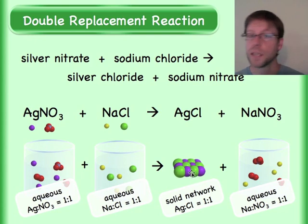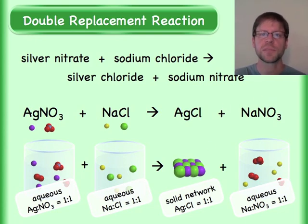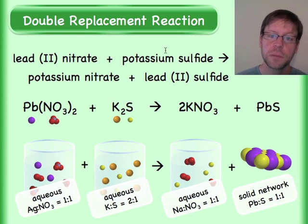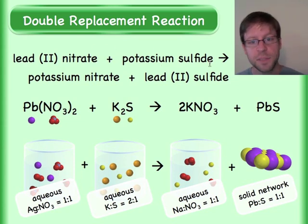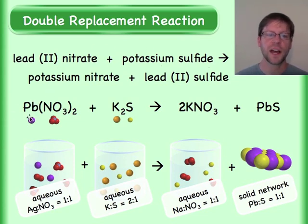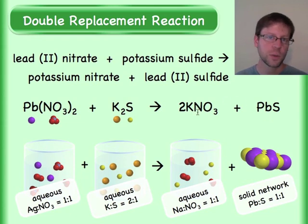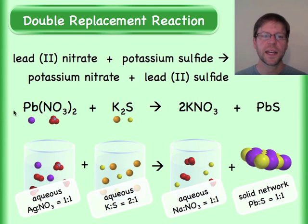Here's another example: lead(II) nitrate plus potassium sulfide. The lead is currently with the nitrate; going over to the other side, the lead is no longer with the nitrate — it's now with the sulfide.